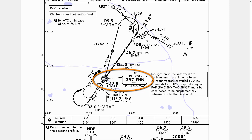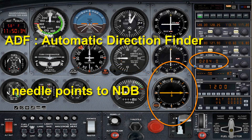When planning the flight I used the Eindhoven approach chart, and there is an NDB in the same direction as runway 21. The frequency of it is 397, which means I can tune 397 in the automatic direction finder radio, and then the needle should point me directly to that NDB.